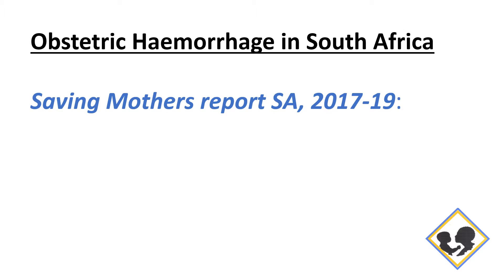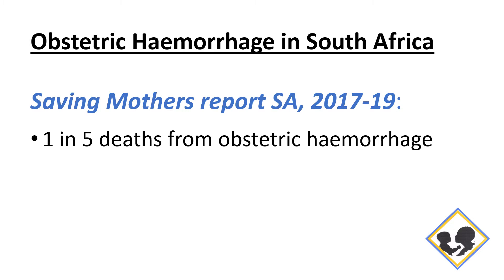Obstetric hemorrhage is common. It's a major cause of death in South Africa, and it should be something to prepare for at every caesar. It's going to happen at some point that you must deal with a bleeding perioperative caesarean section patient. It may be unexpected, and it can happen with astonishing rapidity. One in five deaths in South Africa occur from obstetric hemorrhage.